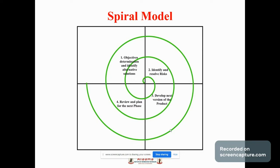There are some advantages of the spiral model. First, there is a high amount of risk analysis, hence avoidance of risk is enhanced. It is good for large and mission-critical projects. There is strong approval and documentation control. Additional functionality can be added at a later date, and software is produced early in the software life cycle.